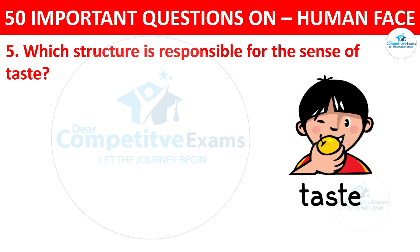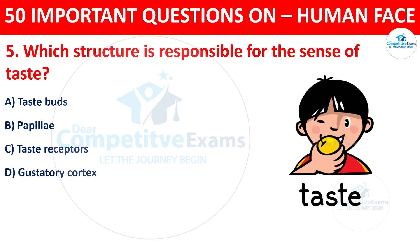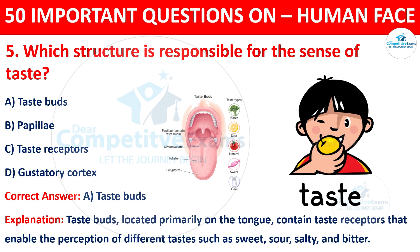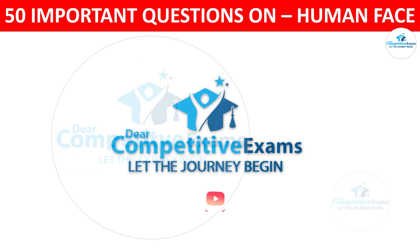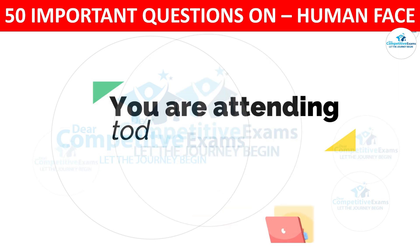Question number five: which structure is responsible for the sense of taste? The options are taste buds, papilla, taste receptors, or gustatory cortex. The correct answer is A, taste buds. The taste buds, located primarily on the tongue, contain taste receptors that enable the perception of different tastes such as sweet, sour, salty, and bitter.